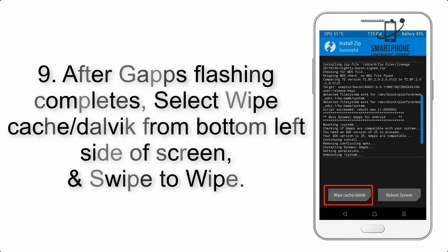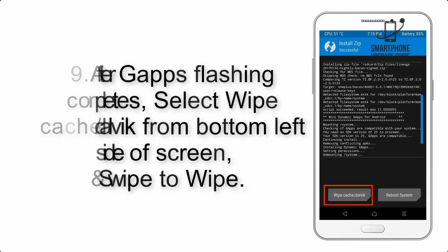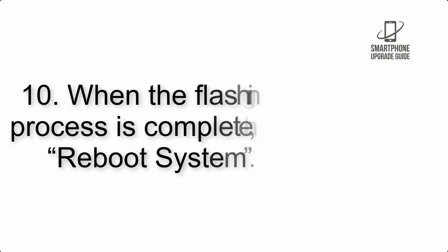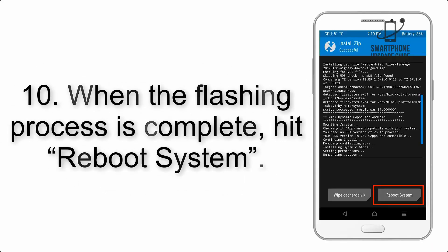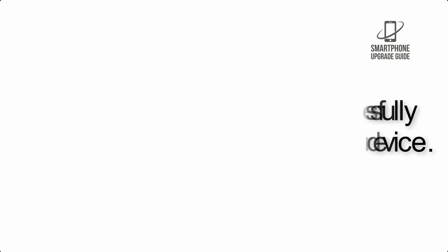Step 8: Flash the GApps zip package in the same manner. Step 9: After GApps flashing completes, select Wipe Cache and Dalvik from the bottom left side of the screen and swipe to wipe. Step 10: When the flashing process is complete, hit Reboot System. That's it — you have successfully installed the ROM on your device.